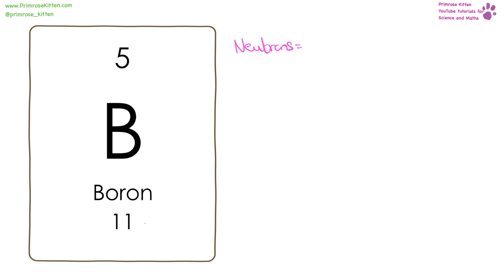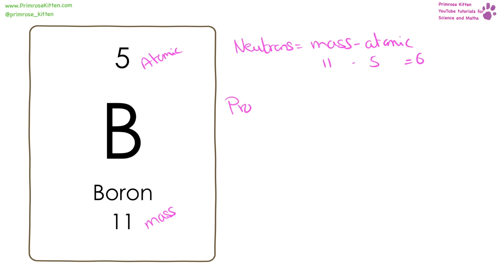Here we have boron. The mass number is 11 and the atomic number is 5. To find the number of neutrons, that is mass number minus atomic number: 11 minus 5 gives us 6. Protons equal 5, electrons equal 5. Protons have a positive charge — one, two, three, four, five — and electrons have a negative charge — one, two, three, four, five.